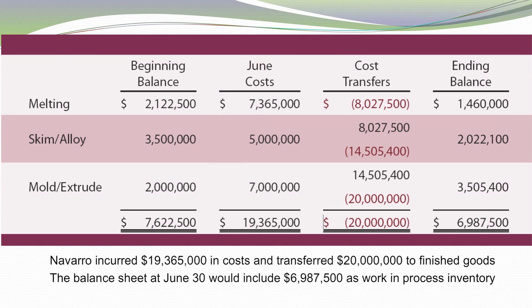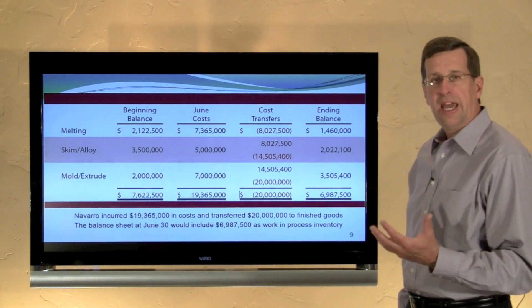It's possible to do a fairly comprehensive schedule, illustrated in the book. It looks like a lot of information, but very simply we've got rows for each department: melting, skim alloy, and mold extrude. In total there was $7,622,000 in beginning work in process accounts. We have the cost actually incurred within each department during the month — $7,365,000 in the melting department and $5 million and $7 million for the next two departments — so additional cost incurred were $19,365,000. We have cost transferred out: $20 million went into finished goods inventory, with transfers flowing from melting to skim alloy, from skim alloy to mold extrude, and finally out to finished goods.